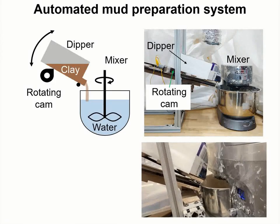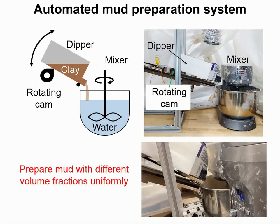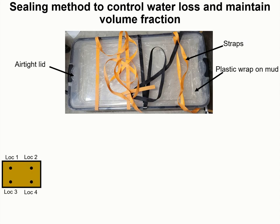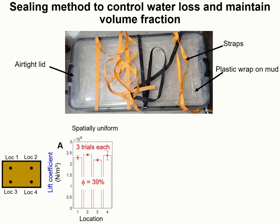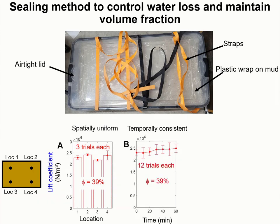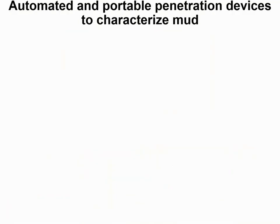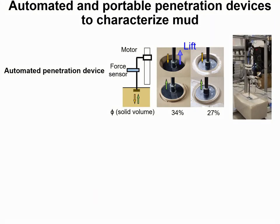As a first step, we designed an automated system to help prepare mud uniformly for different volume fractions. To help control the water loss of the mud during storage, we used and tested a sealing method where we placed a plastic wrap on top of the mud to prevent water evaporation when the lid is open, and added a lid with a strap to secure it onto the container. We characterized mud at four different locations over the course of one hour, which is the normal duration of our experiments. The results showed that there is similar water loss across all four locations and some water loss over one hour, but it is well within the deviation.